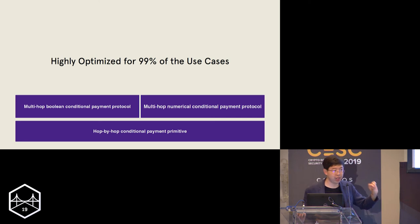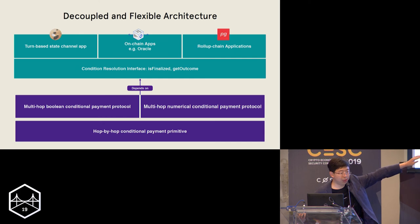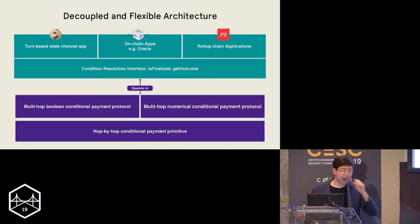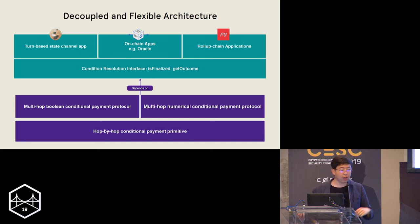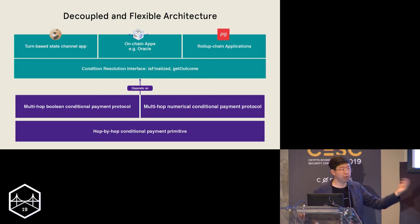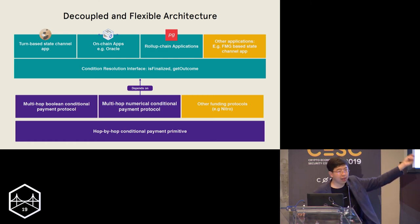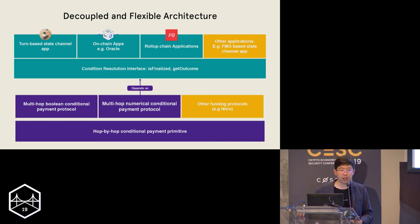We believe these two protocols cover 99% of use cases for layer two payment networks with generic conditional dependency capability. This multi-hop payment network depends on the conditional resolution interface, which is basically two function calls: is_finalized — is the application in a finalized state — and get_outcome, which returns bytes from the application. On top of that you can connect turn-based state channel applications, which we support and provide a framework for, as well as on-chain oracle contracts, or even other layer two constructs such as rollup state in a rollup application. The entire architecture is very flexible.